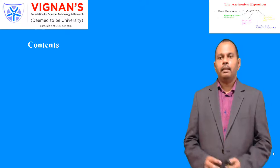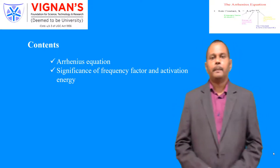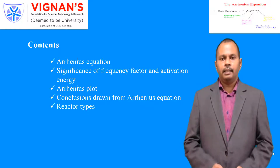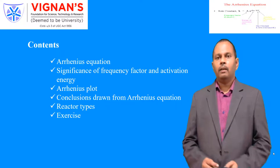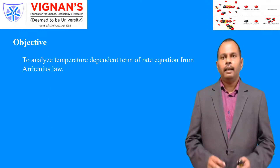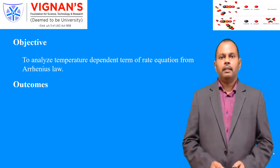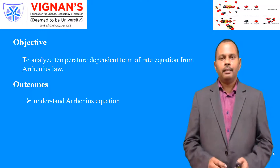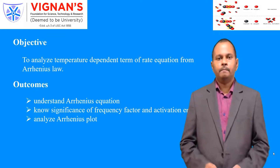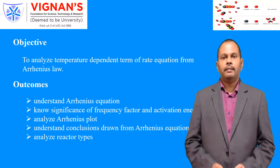Contents of today's topic are: Arrhenius equation, significance of frequency factor and activation energy, Arrhenius plot, conclusions drawn from Arrhenius equation, various reactor types, exercise, followed by summary. The objective is to analyze the temperature dependent term of the rate equation from Arrhenius law. After completion of this topic, students will be able to understand the Arrhenius equation, know the significance of frequency factor and activation energy, analyze the Arrhenius plot, understand conclusions drawn from the Arrhenius equation, and analyze various reactor types.